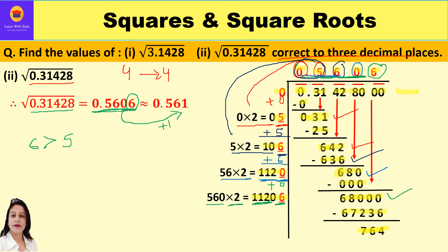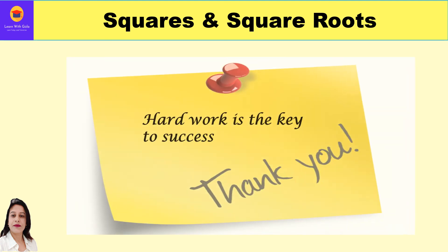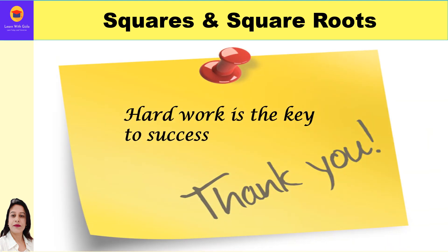This is how the square root value changes the moment we change the decimal point — even though the digits in both numbers were the same, we got different square roots because of the different periods formed. Hope you enjoyed the video and understood both parts. Please like and subscribe to my channel. Thank you everyone, have a great day ahead.